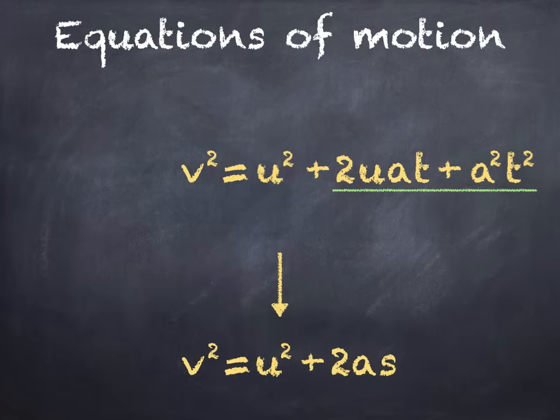Dividing 2uat by 2a gives ut. If we divide a squared t squared by a, we would get at squared. So dividing by 2a would give half at squared. So the right hand side of the equation can be written like this.